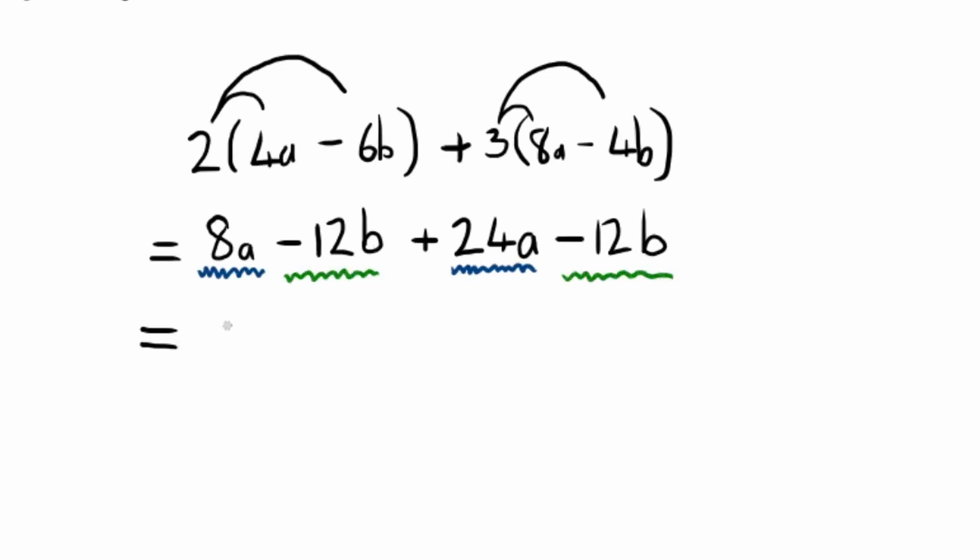So let us simplify this one last time. 8a plus 24a - well, 8 plus 24 is going to be 32, and my variable is a. Then we have negative 12b and we subtract another 12b, so we are going to be looking at the coefficients: negative 12, negative 12 equals negative 24, and the variable b. That will be my final answer.